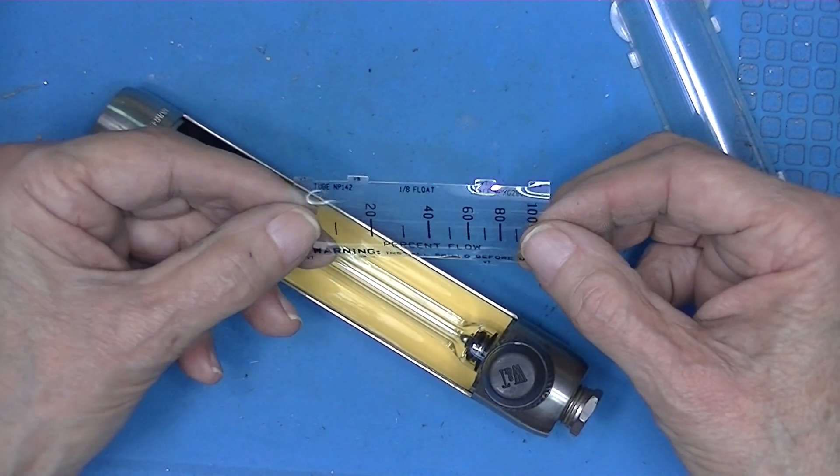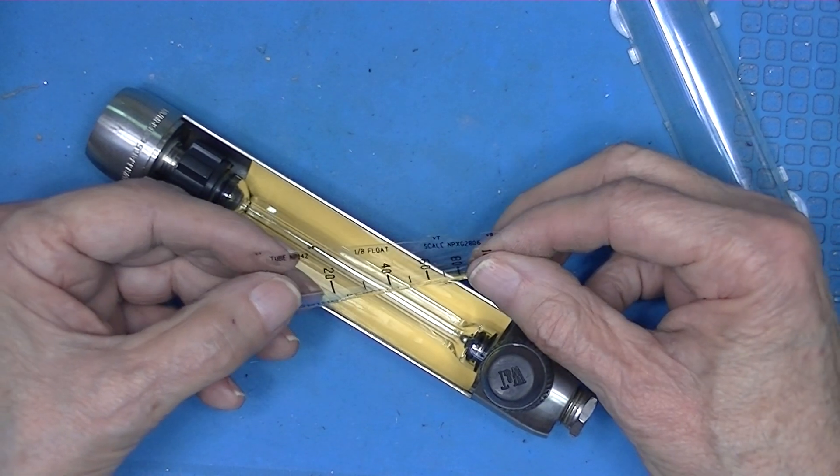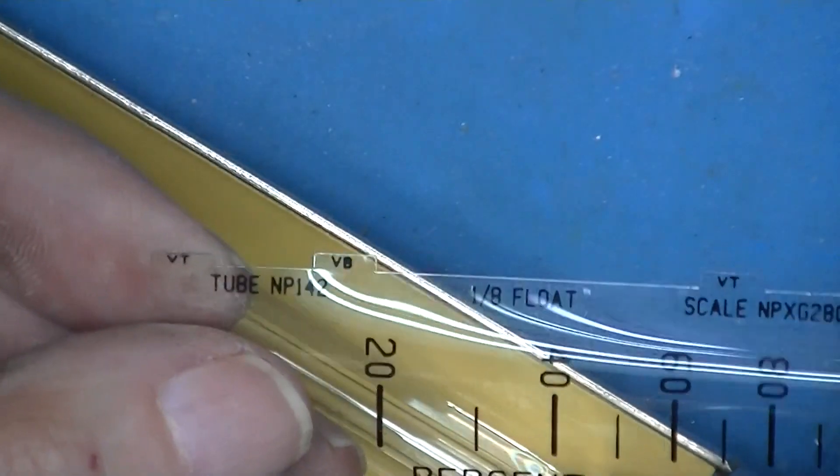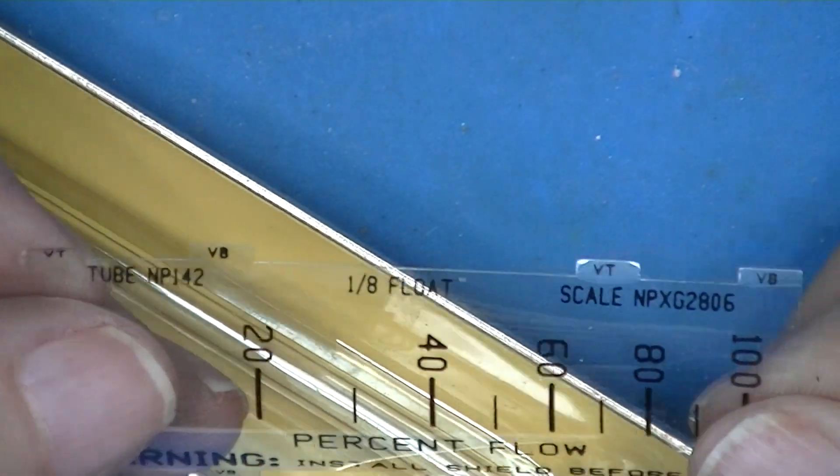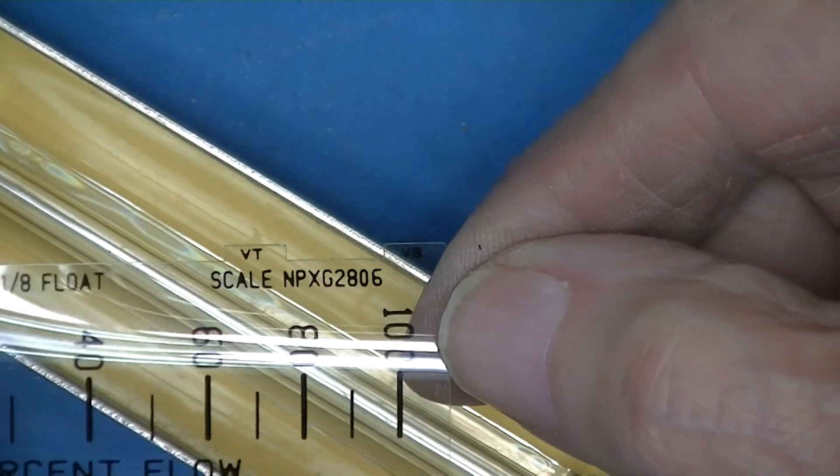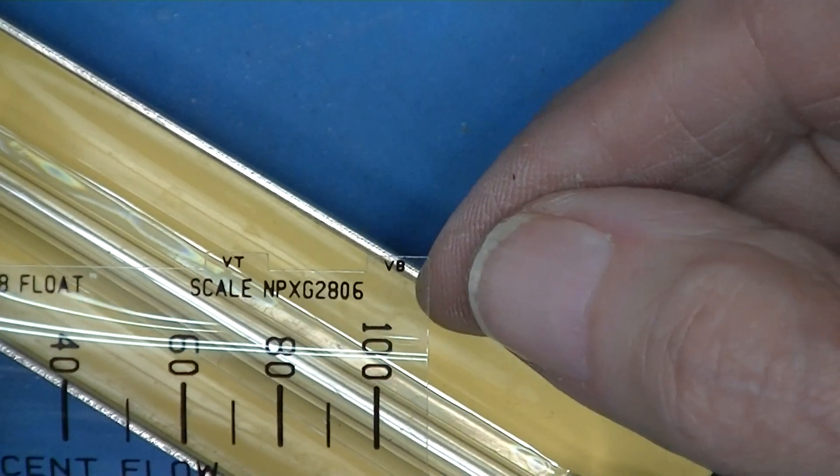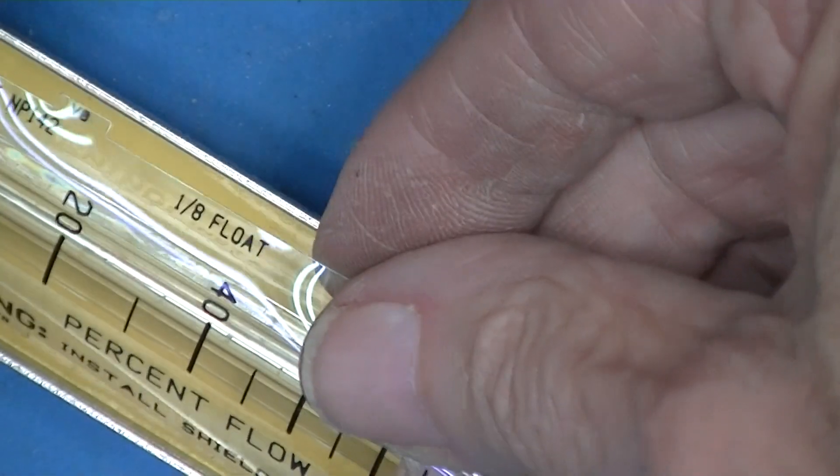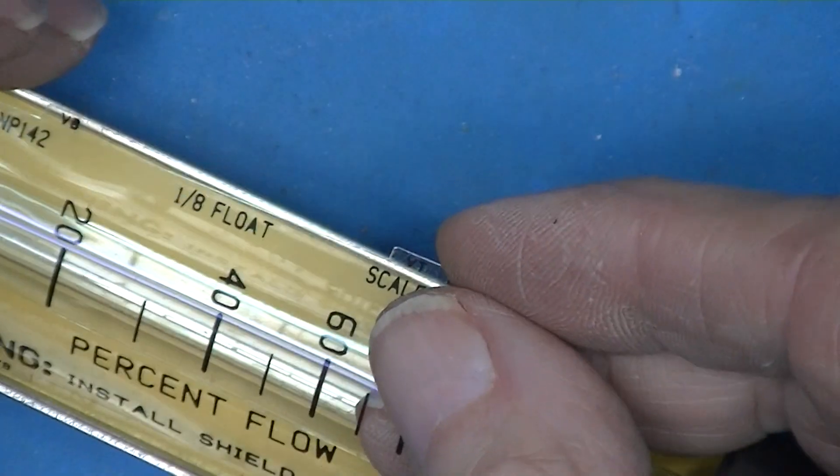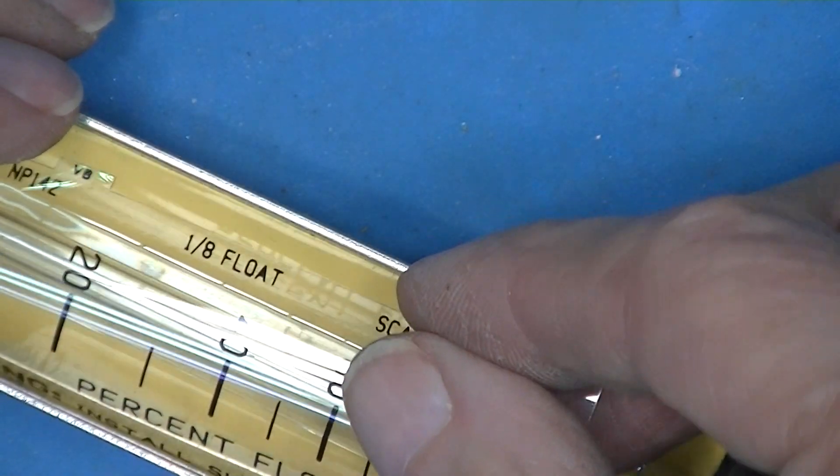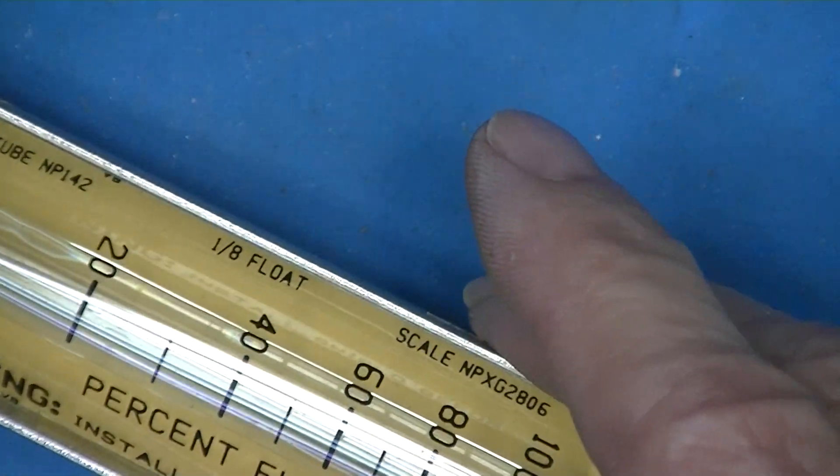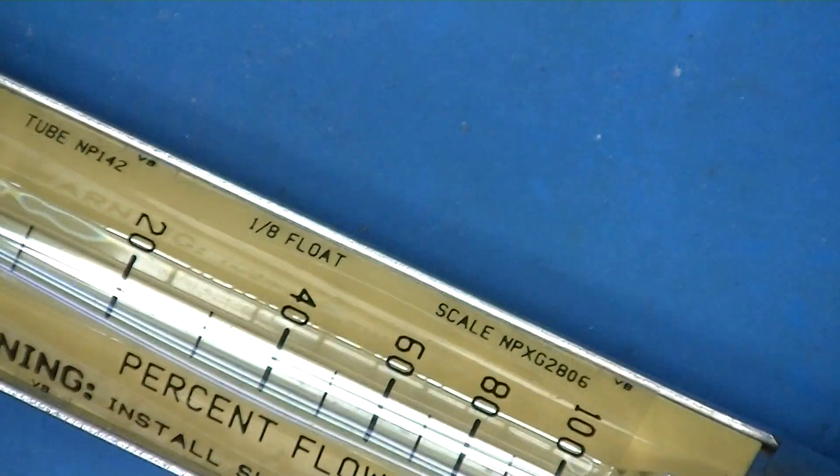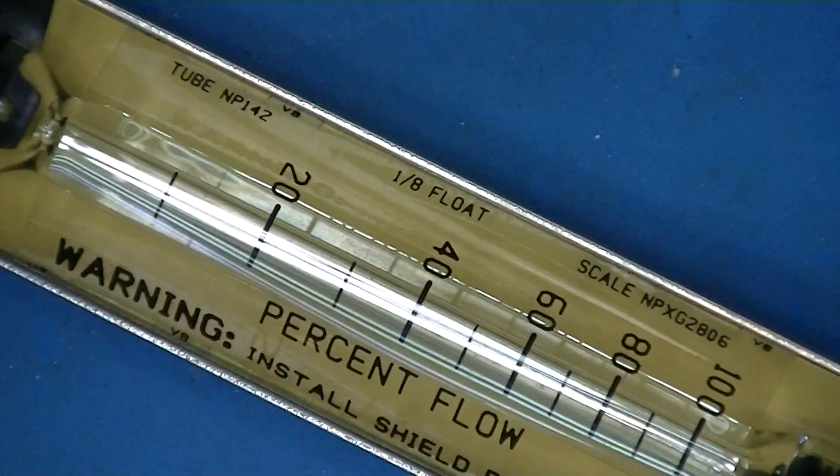Instructions say that the tube is an NP-42. The tube is an NP-42, whatever that means, a 1.8 float, and a scale which means nothing to me. The scale is not part of the tube, it's not etched. So I can't believe this is a quality meter since the scale is not actually on the glass tube, and it reads percent of flow.